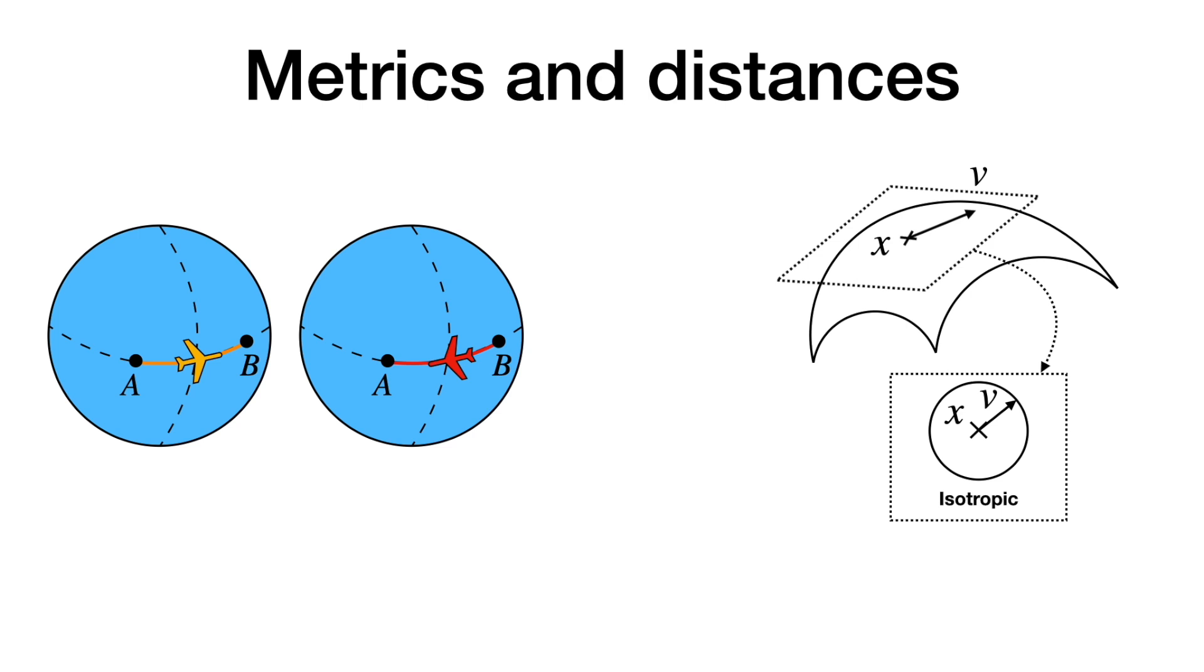Usually, all directions are the same, meaning that tangent vectors in a circle all have the same length. The metric is isotropic.